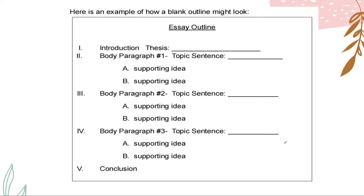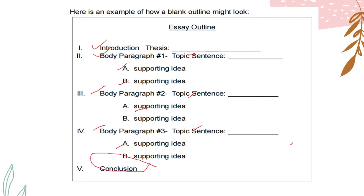Here's an example of how a blank outline might look. First, we have the introduction. Next is the body paragraph with supporting ideas — what is your topic sentence for the first paragraph? Second is body paragraph 2, with its topic sentence and supporting ideas. Then paragraph 3, the topic sentence and supporting ideas again. And then you have to conclude — in every essay or written article, you have to have your own conclusion based on your evidence and facts.